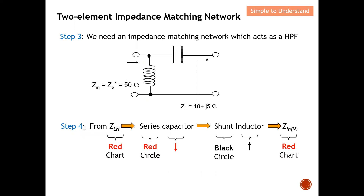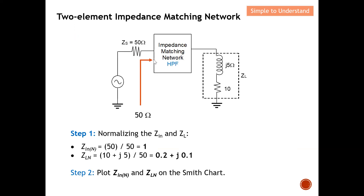On step four, we implement the impedance matching. We start from the load — the next component is a series capacitor, followed by a shunt L, and then finally back to the position of Z_in. Remember, for impedance matching we always start from the load, never from the source or Z_in. We always start from the load because we are matching toward Z_in in order to achieve maximum power transfer.